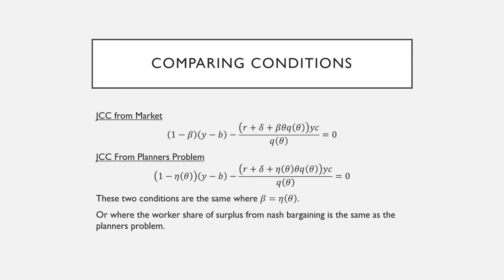So comparing these two conditions, we see that they are very similar. They're actually the same when beta here is equal to η(θ), or where we say our worker's share of surplus from our Nash bargaining is the same as that from the planner's problem.